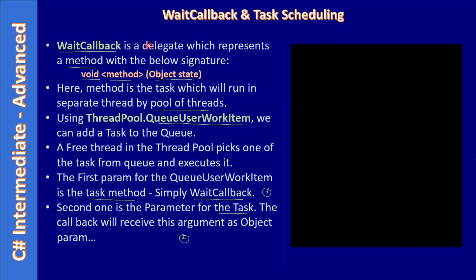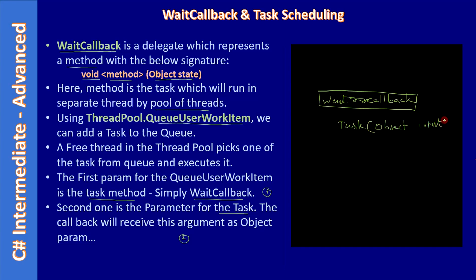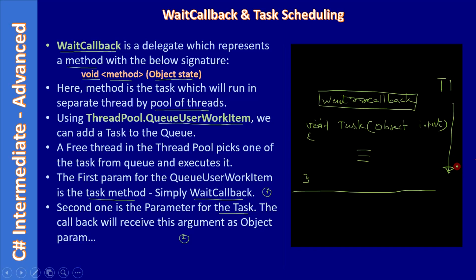The WaitCallback delegate expects a method. The method takes an input parameter — you can call it state — it should return void, and the task will run in a separate thread. For example, the thread pool allocates a thread T1 which executes this task. From another thread, such as a UI thread or a console main thread, you will be creating and submitting the task.